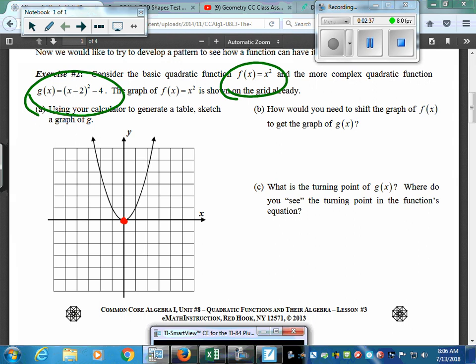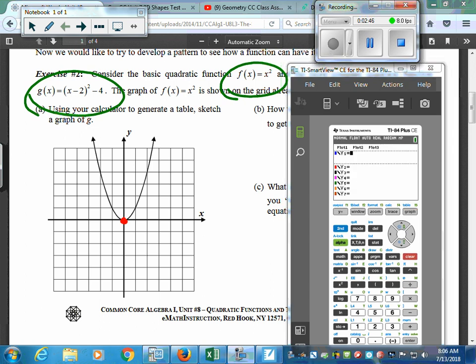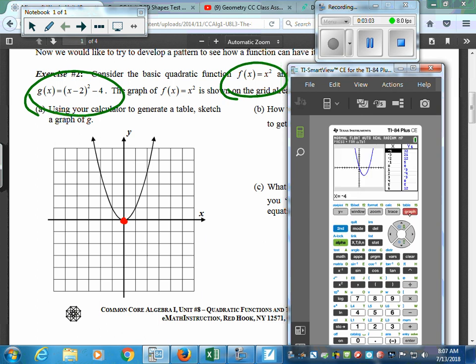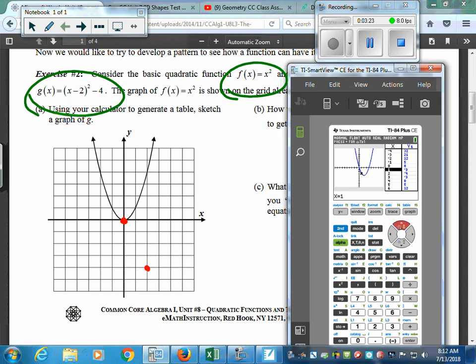Now I'm going to take the calculator, put it up in my screen. I'm going to go to y equals. I'm going to type in that function. So I got x minus 2 in parentheses squared minus 4. And I'm going to go to second graph. So now I've got a new graph here. I'm going to use my cursor. I'm going to go up and down. I'm going to start at that turning point. So I got 2, negative 4 for the turning point.